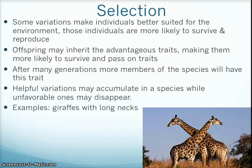Some variations make individuals better suited for the environment. Those individuals are more likely to survive and reproduce. Offspring may inherit the advantageous traits, making them more likely to survive and pass on the traits. After many generations, more members of the species will have this trait. Helpful variations may accumulate in a species, while unfavorable ones may disappear or lessen. An example of this is giraffes with long necks.